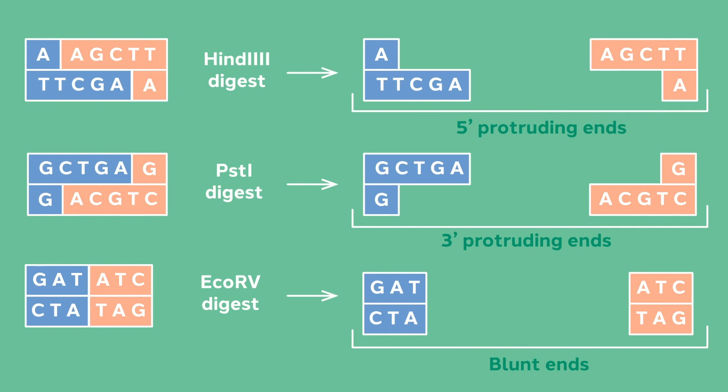In the top example, you can see the 5' protruding end generated by HindIII cleavage. HindIII will always cut at this recognition sequence and will always generate this overhang. In comparison, PstI cuts farther along the 3' strand of its recognition sequence, creating a 3' protruding end after cleavage. A third example is when the enzyme cuts in the middle of the recognition sequence, creating a blunt end.